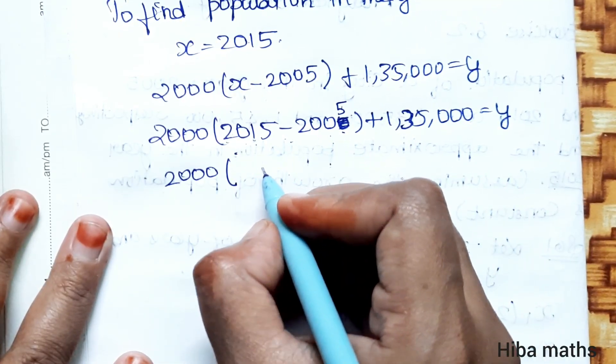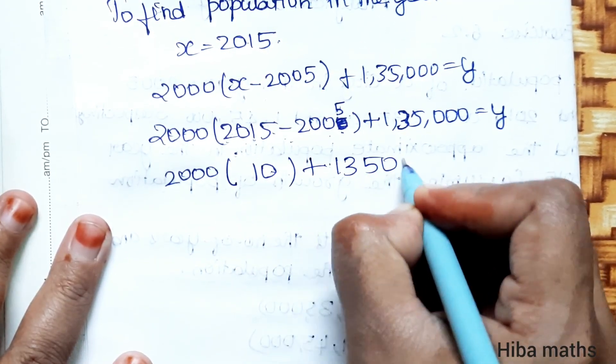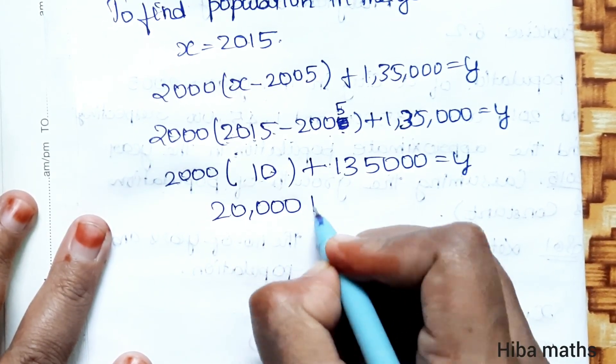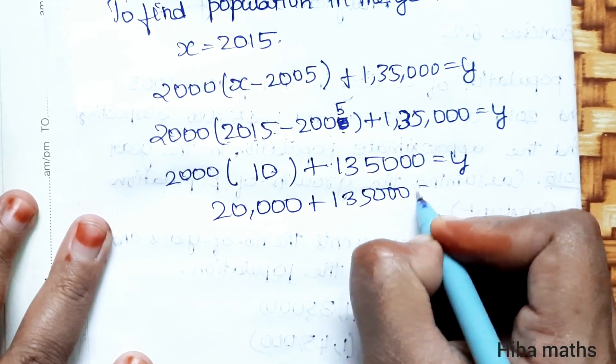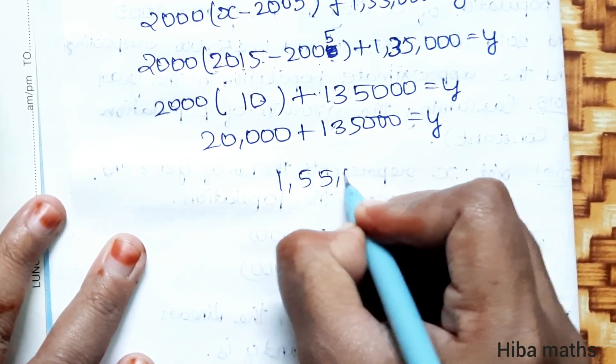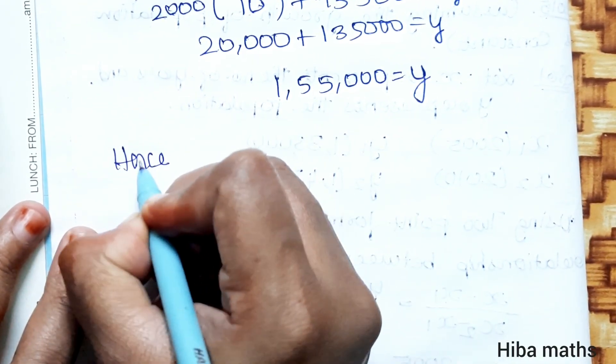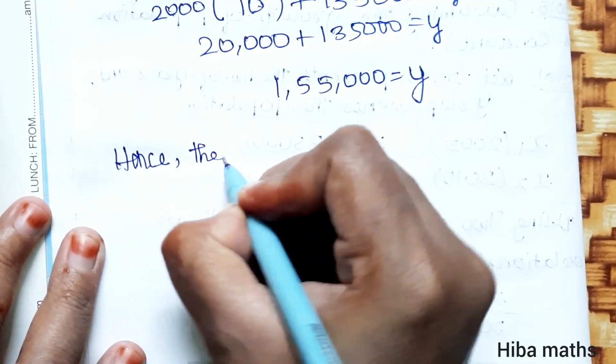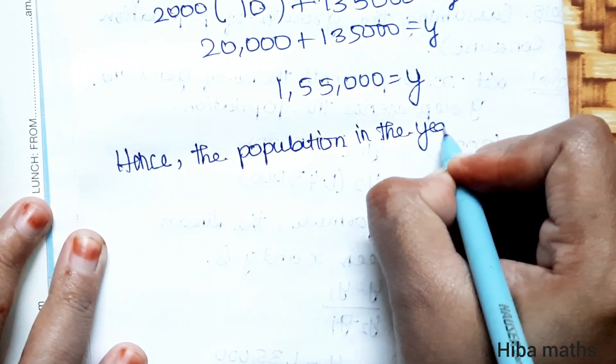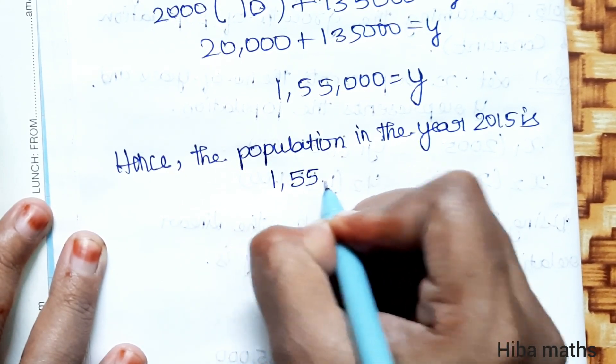We will multiply: 2,000 times 10 equals 20,000. Then 20,000 plus 1,35,000 equals 1,55,000. So population in the year 2015 is 1,55,000.